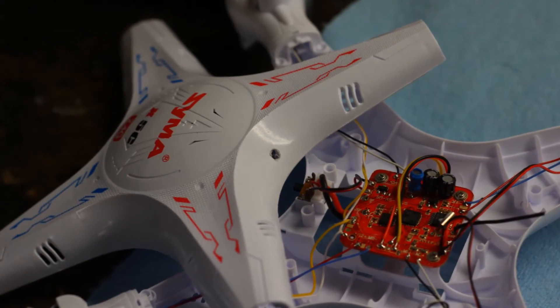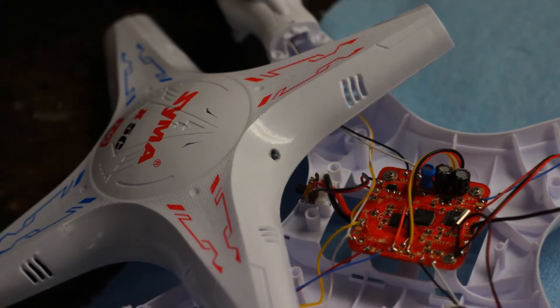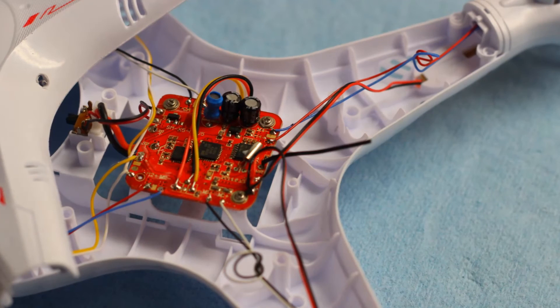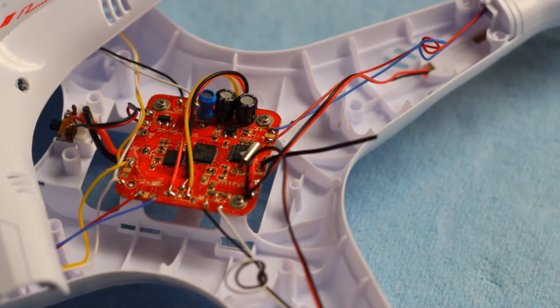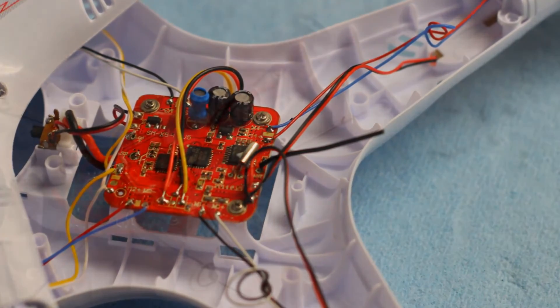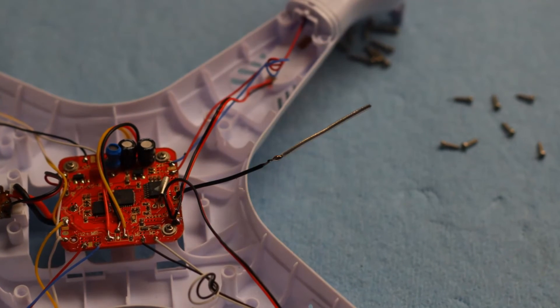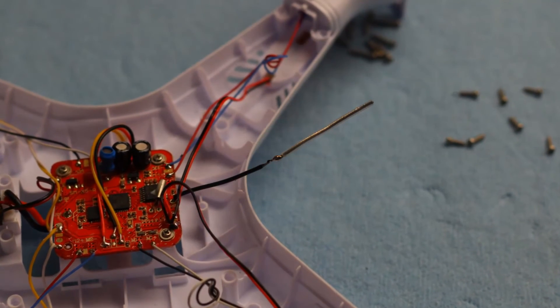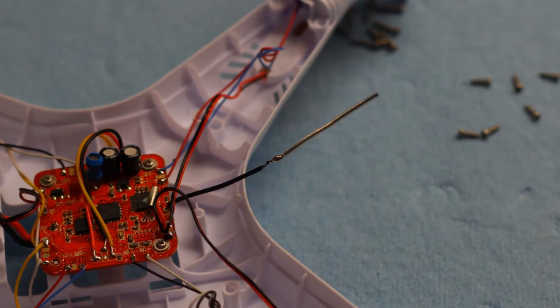What I also did, and I've heard mixed reviews on whether this is good or bad, but I ended up taking the canopy off, drilling a hole in it, and doubling the length of the stock 2.4 gigahertz receiver wire. So essentially I used the exact same wire that I unsoldered from the receiver and soldered it right on to the end of it, doubling the length, and I'm going to let it stick out.